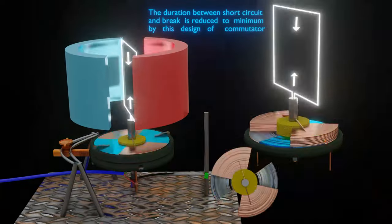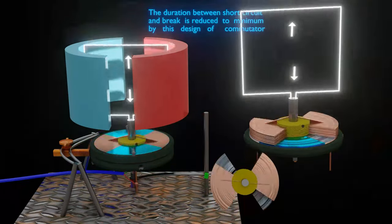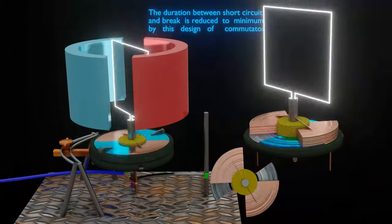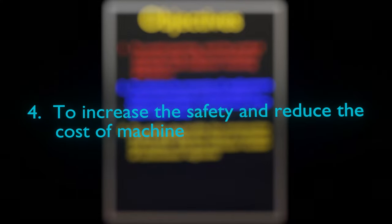Now, lessening the duration of the short-circuit increases the efficiency of the machine, because now there is almost a continuous flow of current through the coil. So Tesla's fourth objective has been fulfilled.